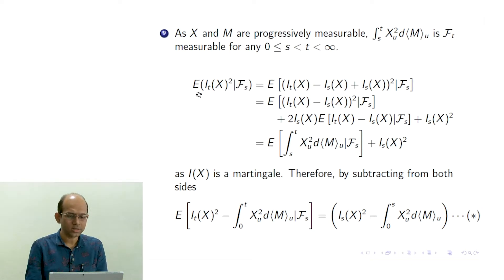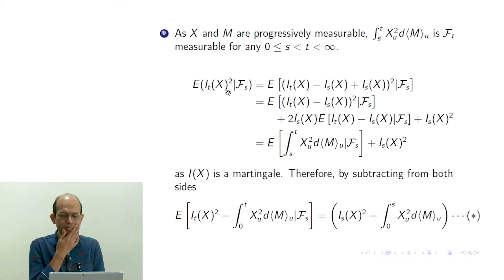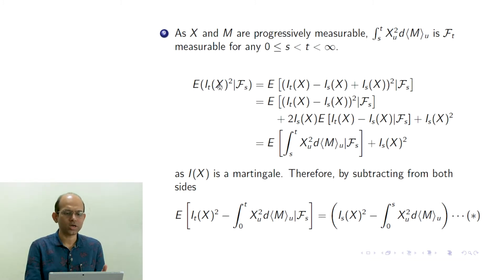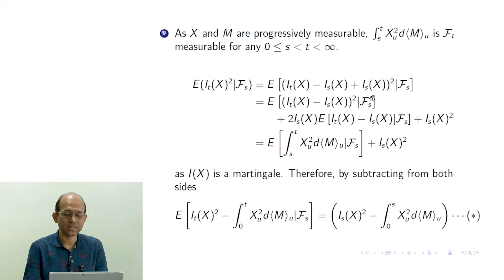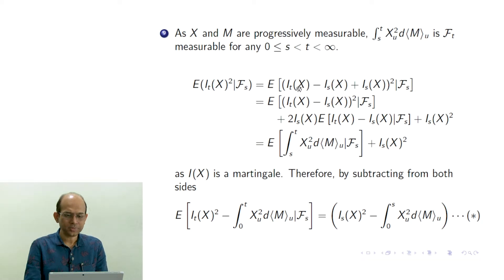Now we consider the conditional expectation of the square of the integration at time T. Think of T as the future and S as the present. We take the conditional expectation of the square of the future integration from 0 to T given the information up to S. What we do is add and subtract I_S, the integration up to S.